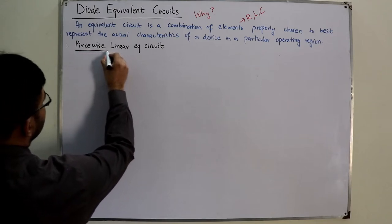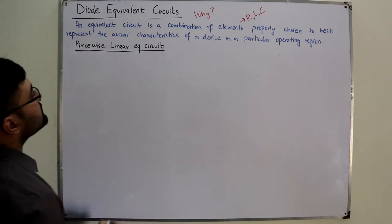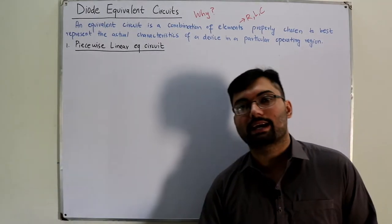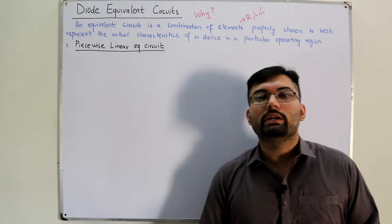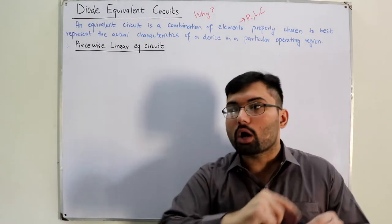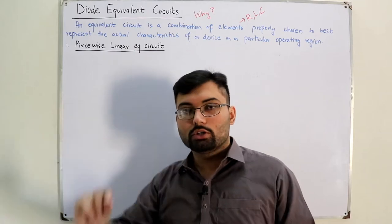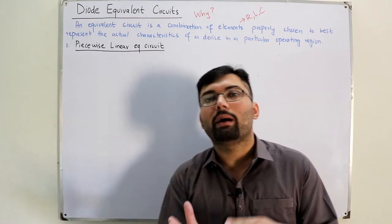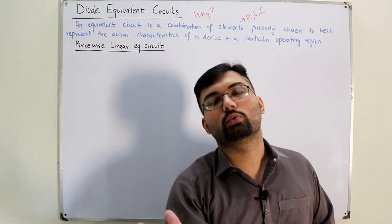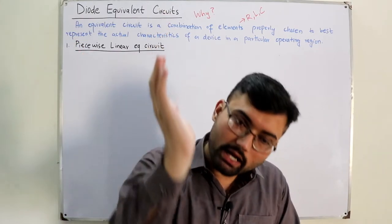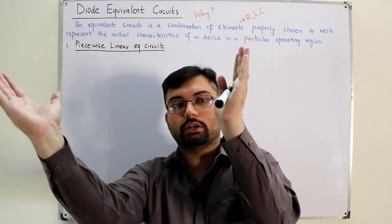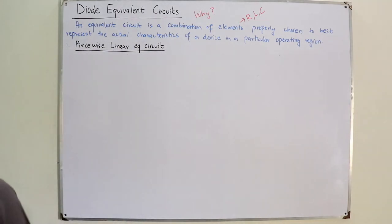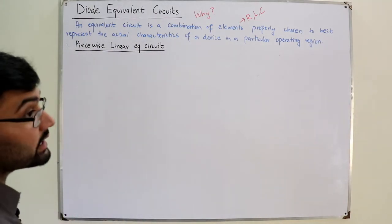In the piecewise linear model, you assume the curve to be linear — although it's non-linear. We don't take it as a proper exponential curve, nor do we take it as a complete vertical 90-degree curve. We take it somewhere in between the complete vertical and the exponential.